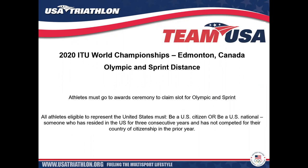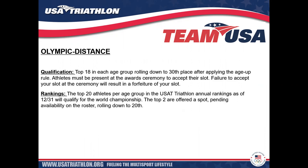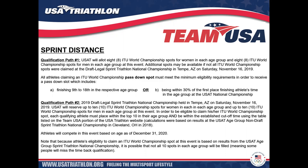For Team USA qualification for 2020 in Edmonton, Canada: you must attend the award ceremony to claim your spot. For Olympic distance, the top 18 in each age group qualify, rolling down to 30th place applying the age-up rule. Additionally, the top 20 athletes per age group in annual rankings as of December 31 qualify, rolling down to 20th pending roster availability. For sprint distance, eight slots are allocated for women and eight for men in each age group at the national championship, with an additional 10 slots at the draft-legal Sprint National Championships in Tempe, Arizona on Saturday August 16th, 2019. Minimum age requirements apply and are listed in the materials.